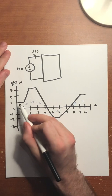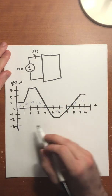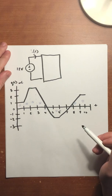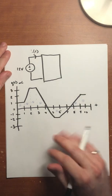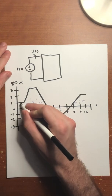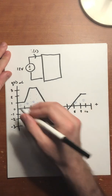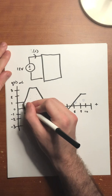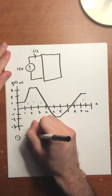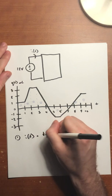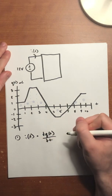We can see that over different time intervals, the charge is either increasing, constant, or decreasing. Using this graph, we're able to find the current going into the box and graph it, as well as the power. We know that current is equal to the change in charge over the change in time — which is essentially the slope of this charge vs. time graph.